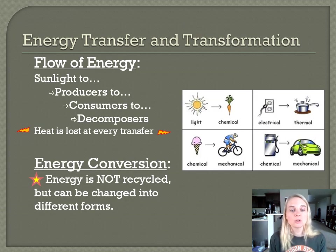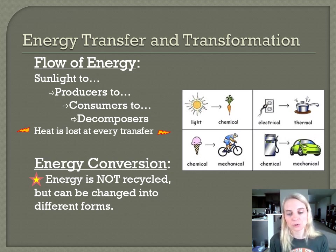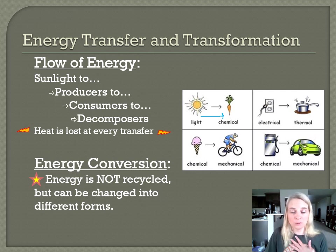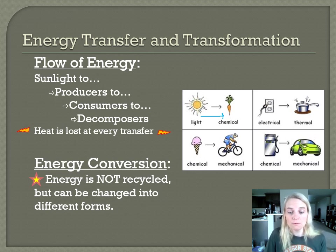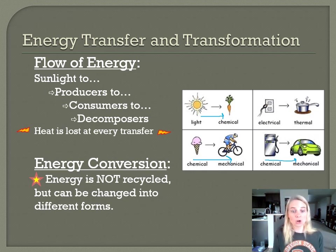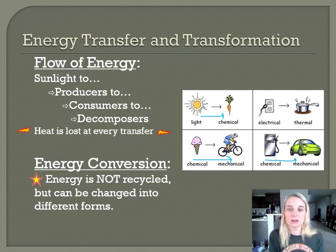Energy flows from sunlight to producers, to consumers, to decomposers, with heat lost at every transfer. Different types of energy conversions include: light to chemical energy in photosynthesis; electrical energy from appliances; thermal energy from cooking; chemical energy in food converted to mechanical energy of moving muscles; and chemical energy in gasoline converted to mechanical energy of a car's motor. We cannot recycle energy — we can only convert it from one form to the next — and heat is lost at every transfer or transformation.